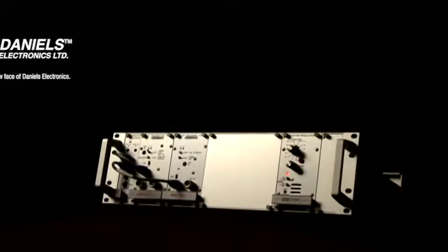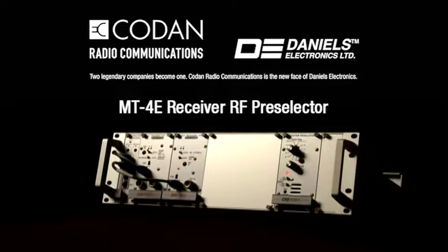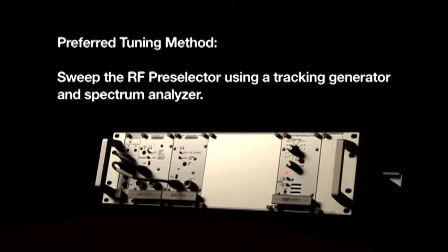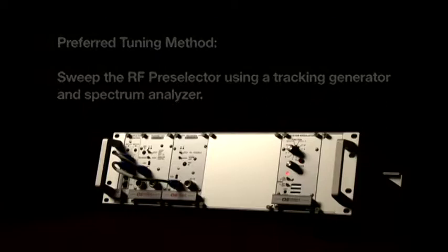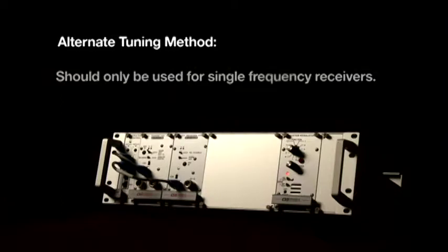This video will describe how to tune the Daniels Electronics MT4E receiver RF preselector. The RF preselector may be tuned several different ways. The preferred method is to sweep the RF preselector using a tracking generator and spectrum analyzer. The alternate method is to tune the RF preselector for best SINAD response. The alternate method should only be used for single frequency receivers.